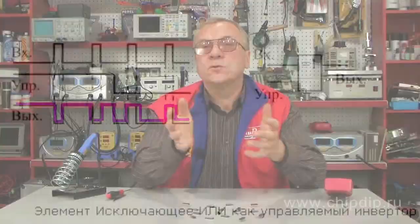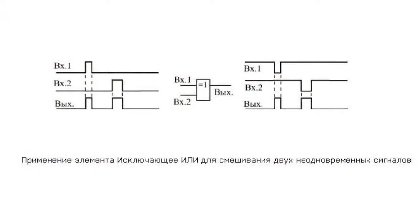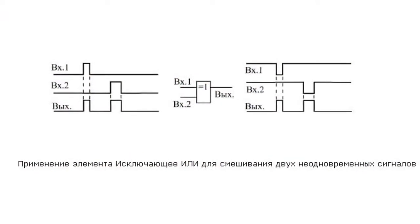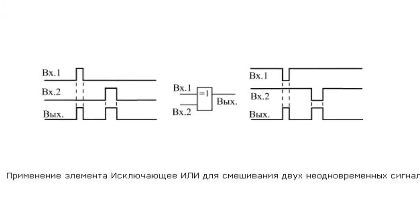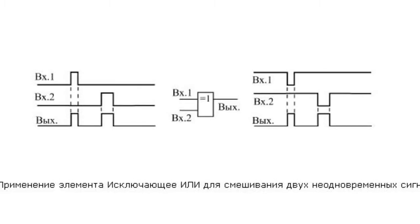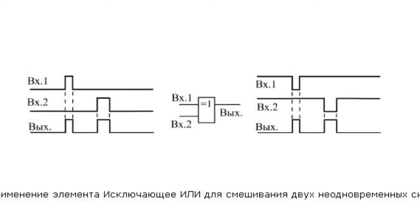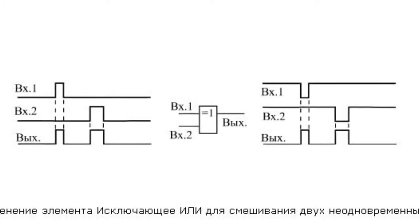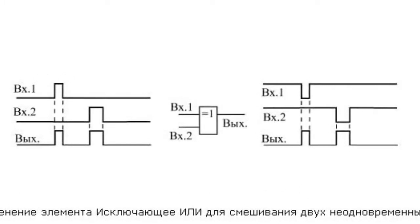In a case where two single-polarity signals are present — positive or negative — and their simultaneous arrival is excluded, an exclusive OR gate can be used to mix them. Regardless of input signal polarity, the gate output signals will be positive.